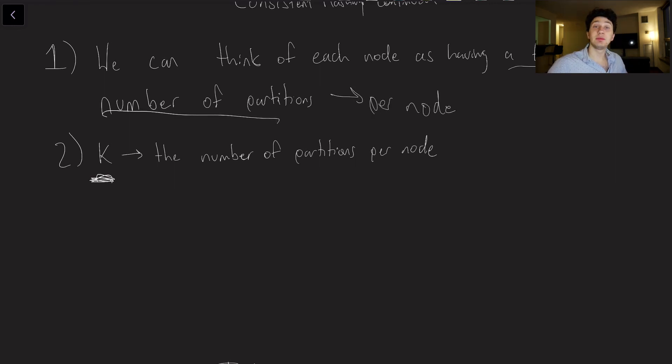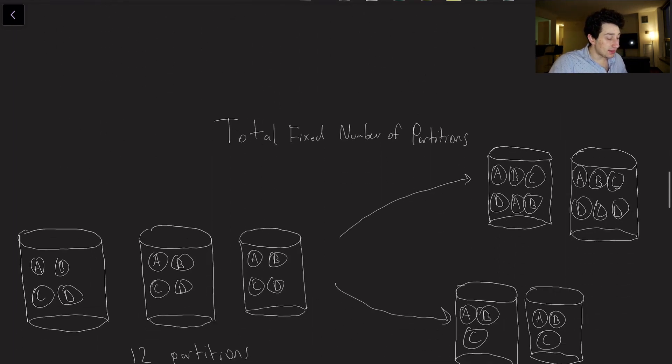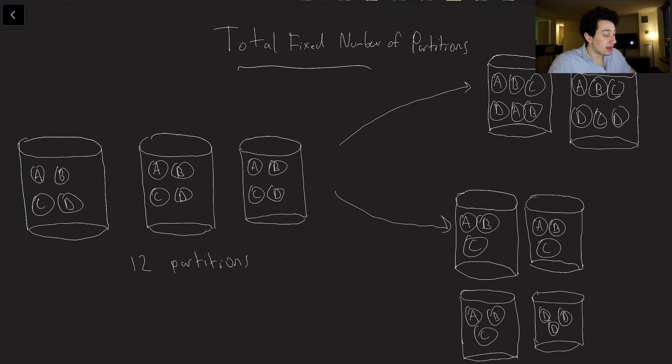Okay, so we've discussed now the concept of having a fixed number of partitions per node. But another possible partition rebalancing method that you'll often see is actually just doing a total fixed number of partitions, and that's not per node but it's per system, right? So like our entire back end has a total fixed number of partitions. So let's imagine in this case that we have 12 partitions.